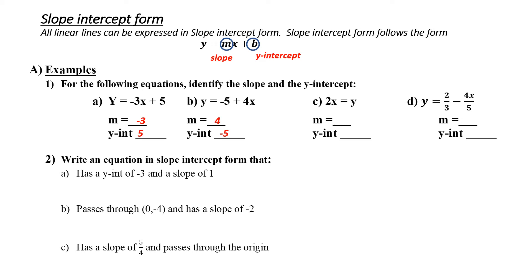For c, I have switched them around on the sides of the equal sign, where y is now on the right-hand side. However, this does not matter. Slope is still the coefficient — in this case, the coefficient to x is two. However, there is no y-intercept mentioned, so that must mean my y-intercept is zero, and there is no point in mentioning it. Finally, d: slope can be in fraction form, and a fraction can also represent the y-intercept. My slope is negative four over five, and my y-intercept is the constant, or two over three.